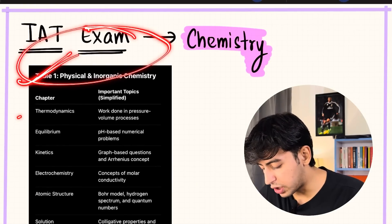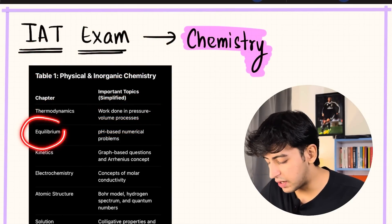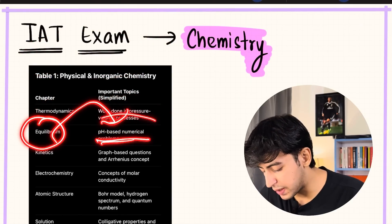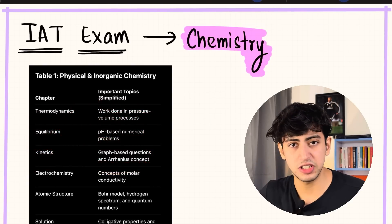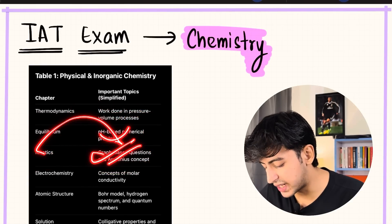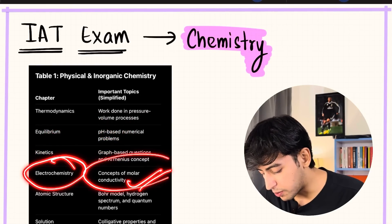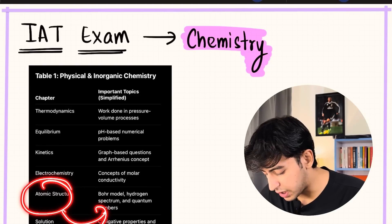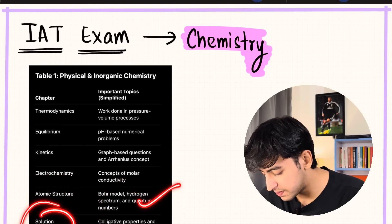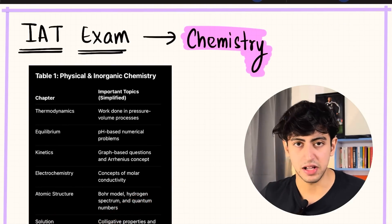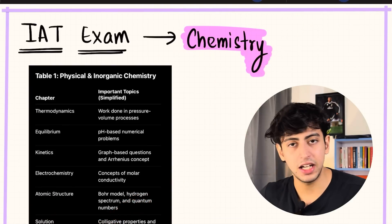Coming to the important topics in physical chemistry: in thermodynamics, work done in pressure volume processes you need to calculate. Equilibrium has pH based numericals. In kinetics you have the RNAs equation and then graph-based problems. In electrochemistry you have molar conductivity. Atomic structure has Bohr models, hydrogen spectrum and quantum numbers. Solutions have colligative property and numericals. These are the most important chapters of your physical chemistry.